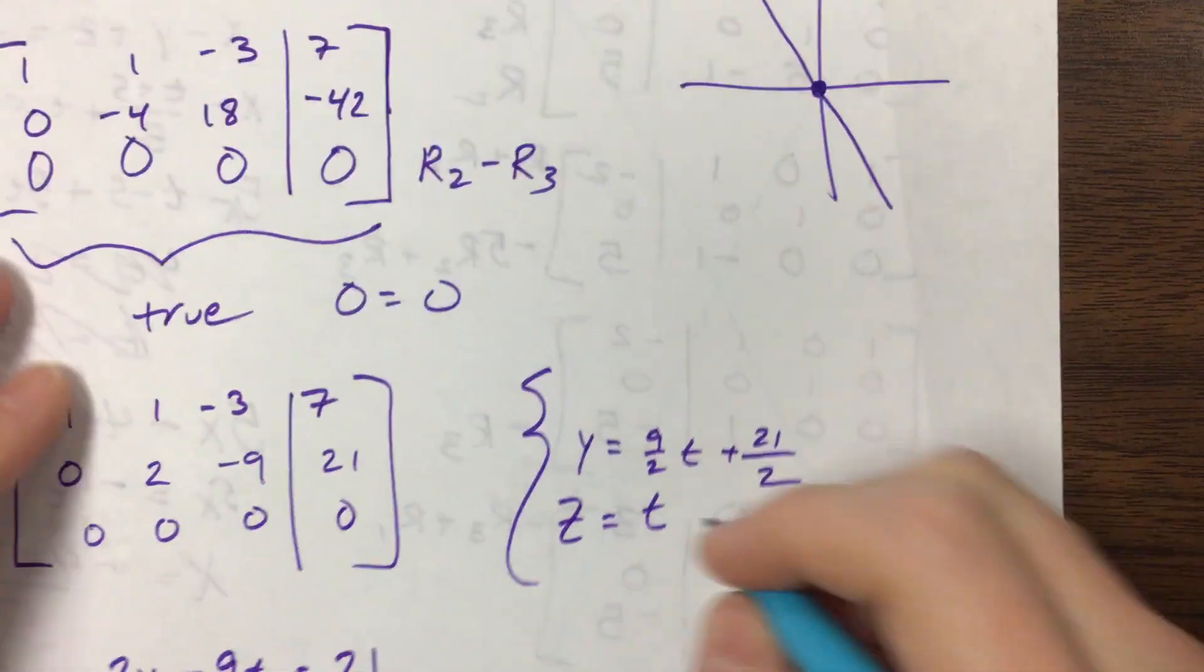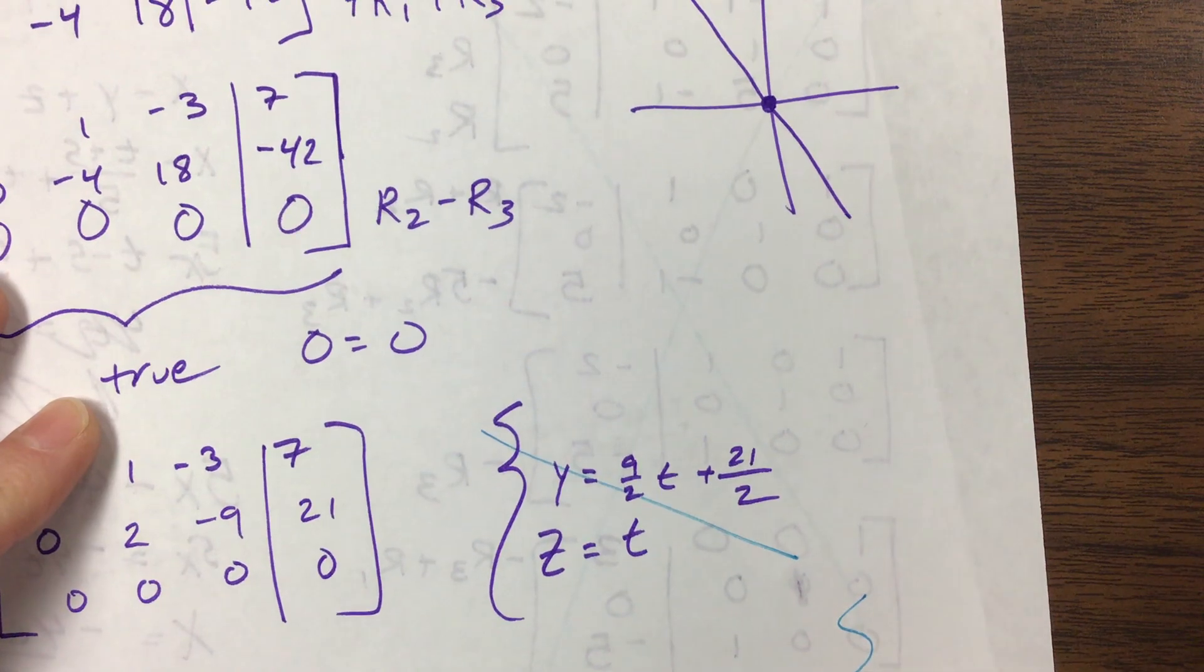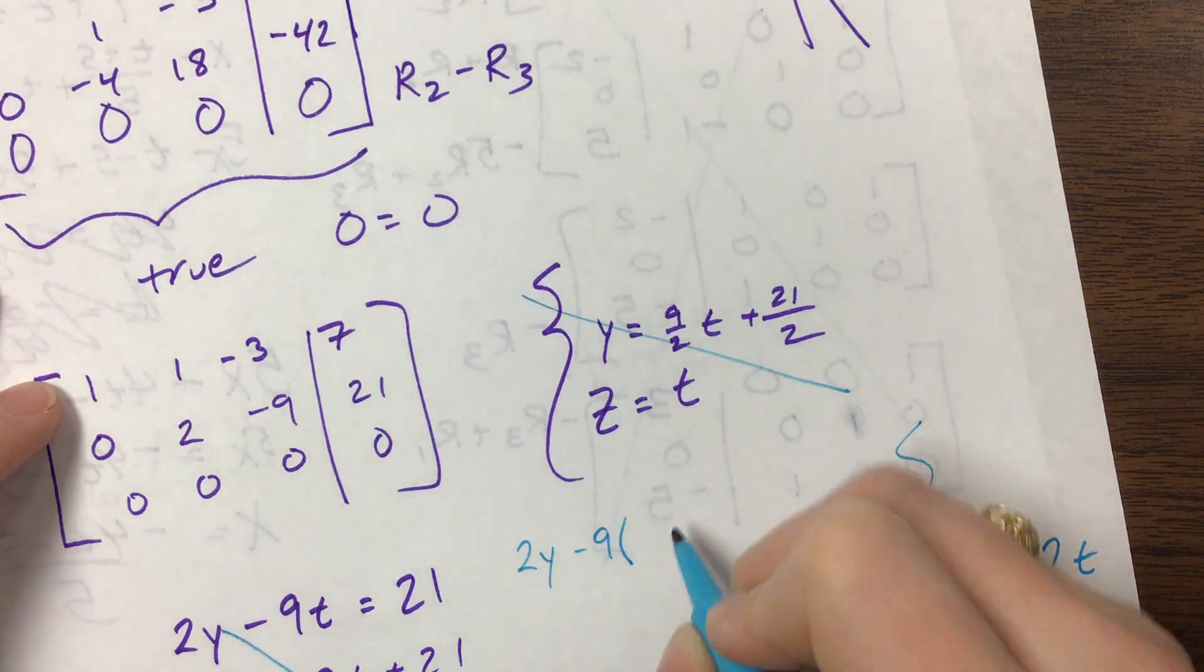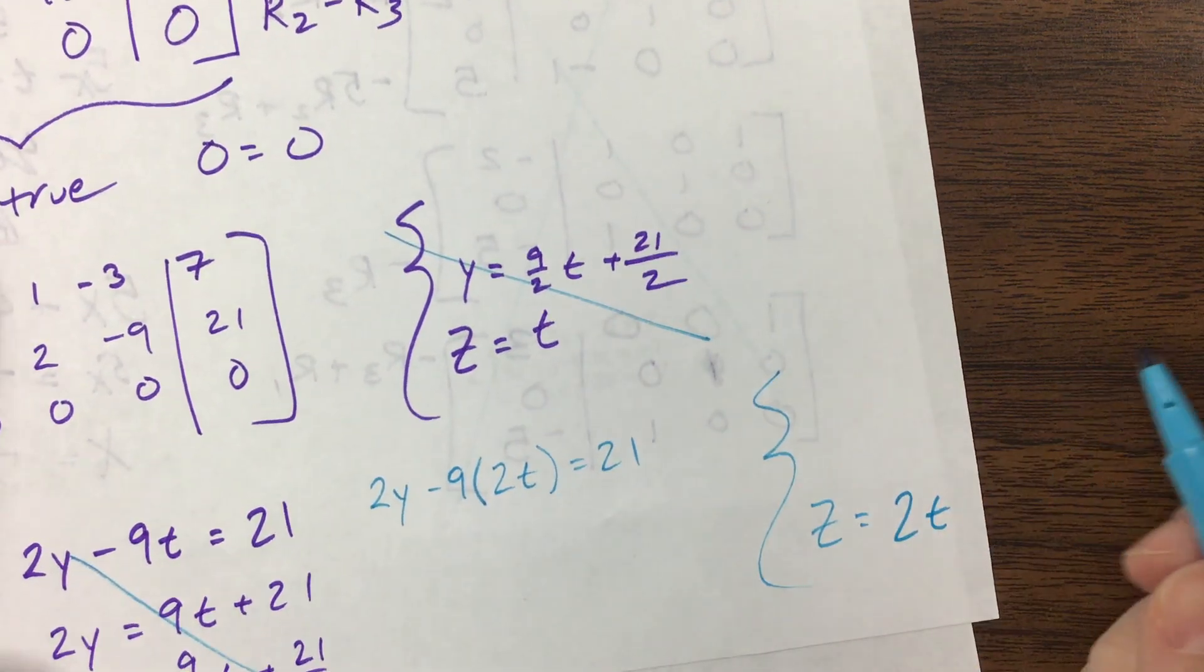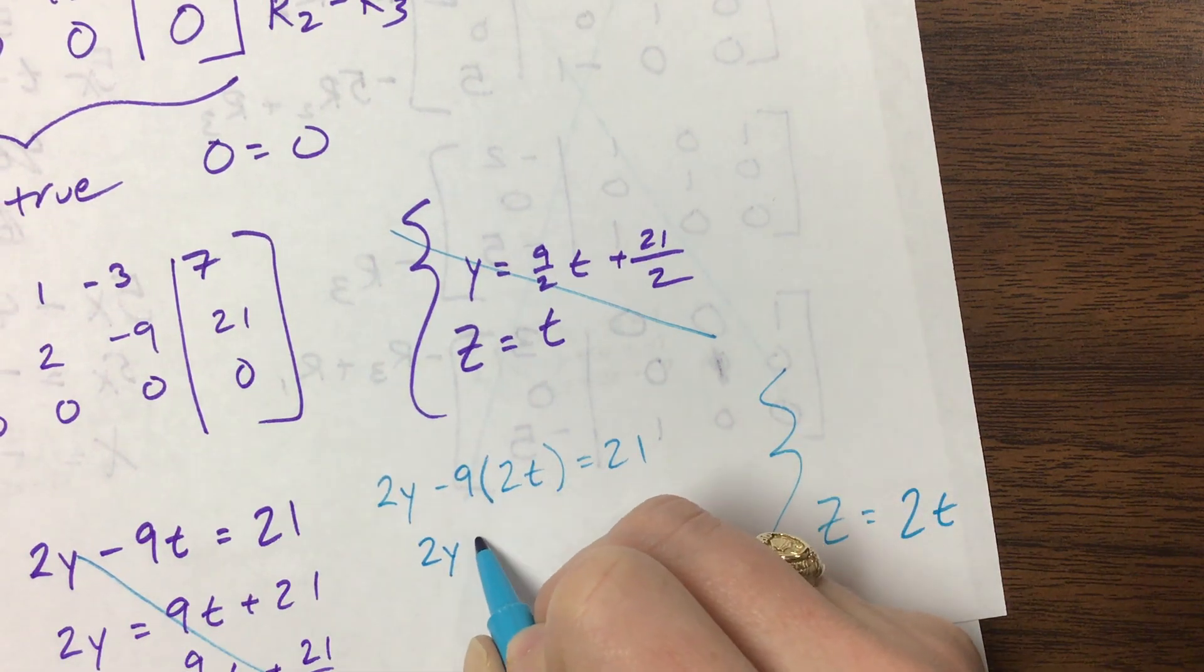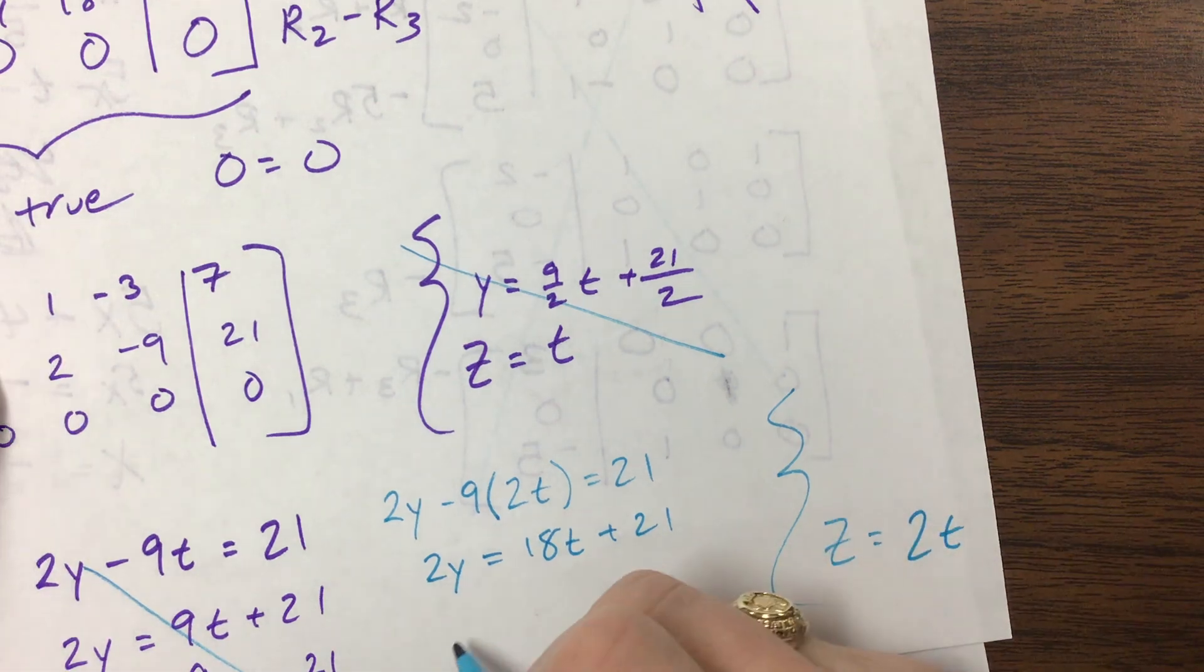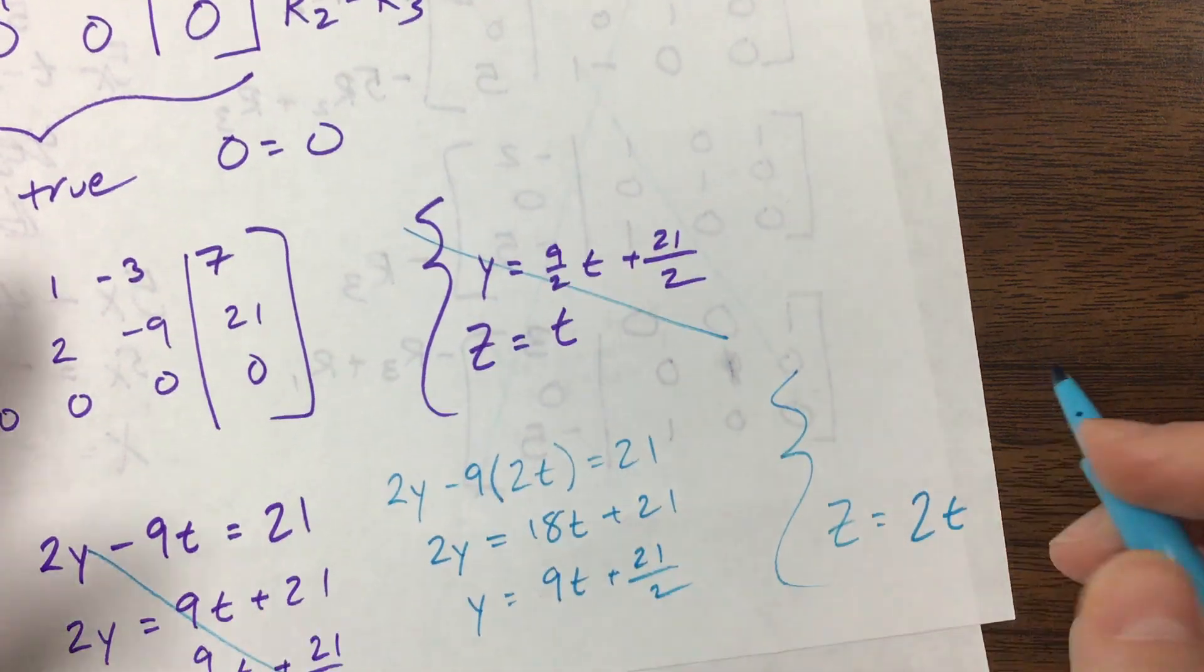So what - let's let z equal 2t. And so now this equation becomes 2y minus 9 times z, which is 2, which is 2t, equals 21. It might improve things a little bit. 2y, add the 18t, equals 18t plus 21. Well, we still have a gross fraction. Okay, well whatever. y is equal to 9t plus 21 over 2.